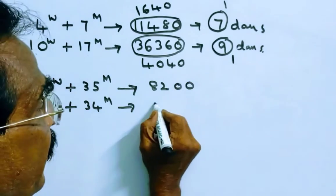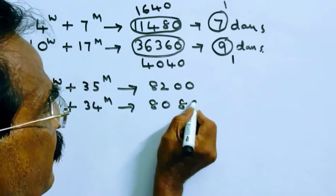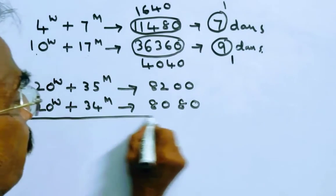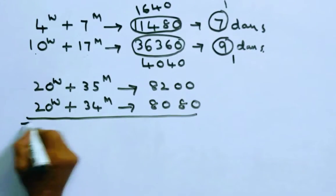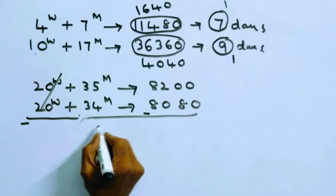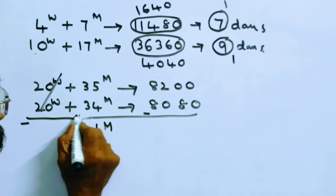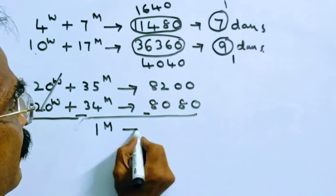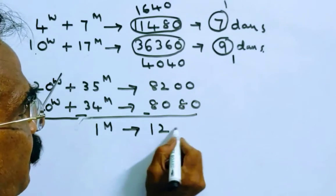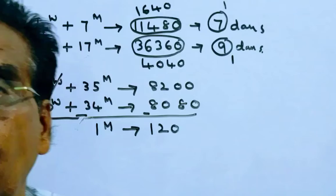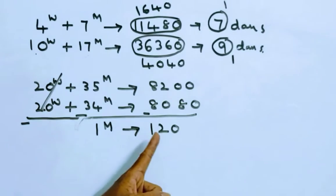By subtraction, one man can earn 120 rupees. So one man can earn 120 rupees per day. Let us substitute this 120 in the first equation.